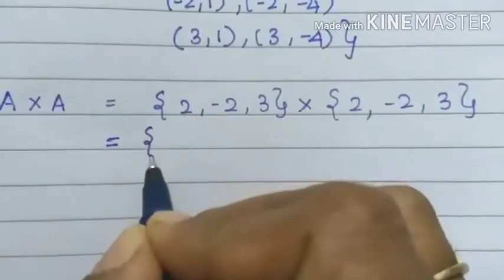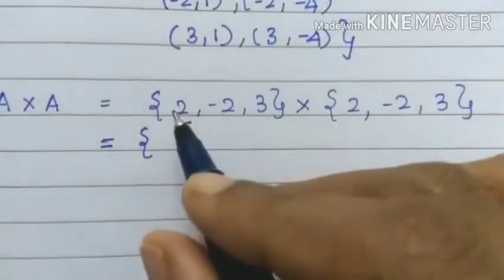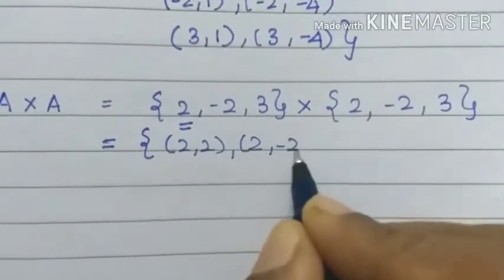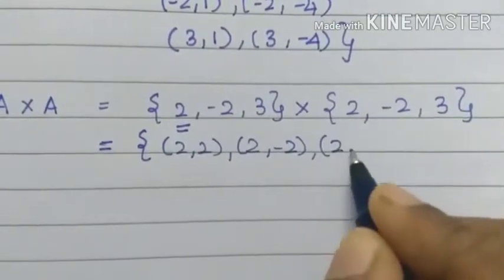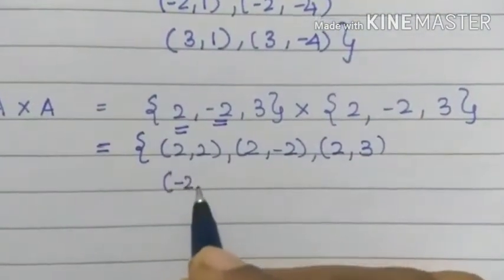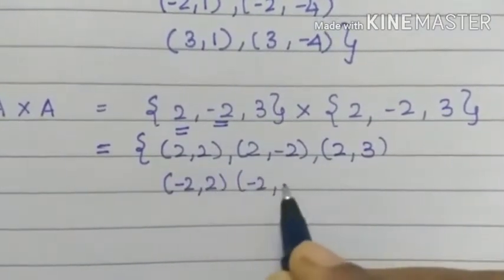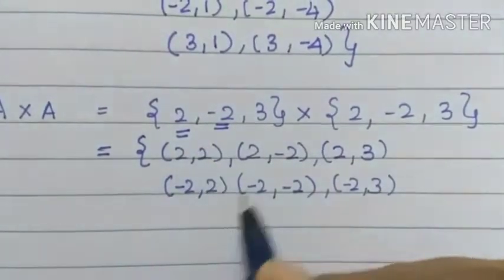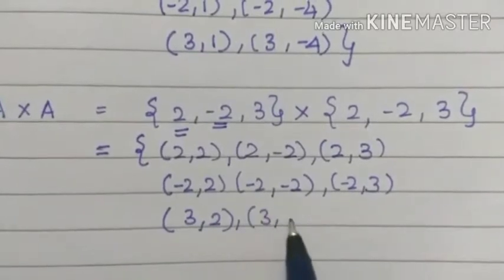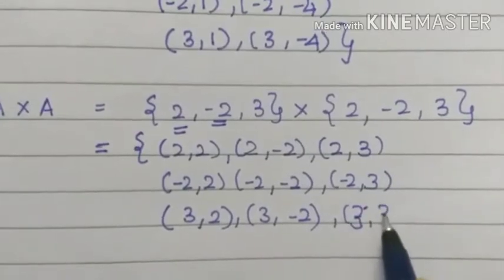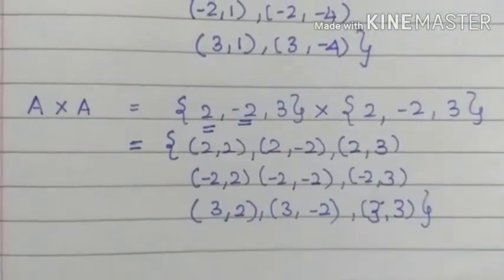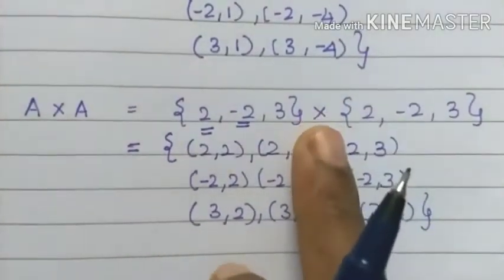Computing A cross A: the elements are 2, 2; 2, minus 2; 2, 3; then minus 2, 2; minus 2, minus 2; minus 2, 3; then 3, 2; 3, minus 2; 3, 3. Open bracket and close bracket — multiply and ordered pair answers. That's A cross A.